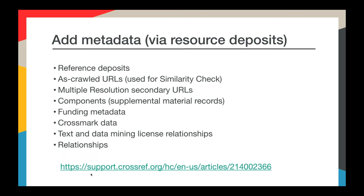You can add this metadata as needed without, for the most part, incurring additional fees. The exception is crossmark metadata. Updating a record doesn't cost you anything otherwise. We charge a one-time deposit fee when a record is initially registered. We'll charge a one-time per-record crossmark fee when crossmark data is initially added, but we don't charge for crossmark updates for existing crossmark records. We don't charge if you're adding funding data or a reference list to an existing record. We only charge you a fee when that data is initially registered, when the DOI is initially registered.